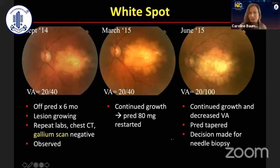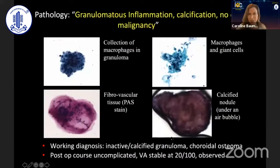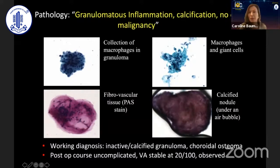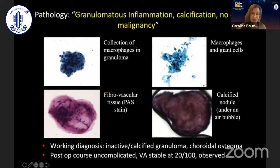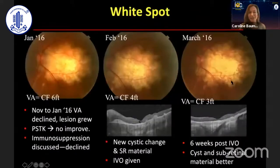Well, this patient had a fine needle aspiration and it came back granulomatous inflammation, calcific, no evidence of malignancy. So we have some reassurance about that. That felt good. So the working diagnosis was a calcified granuloma or an osteoma, and the patient did fine after surgery, but it's not going to end there because the lesion continued to grow.